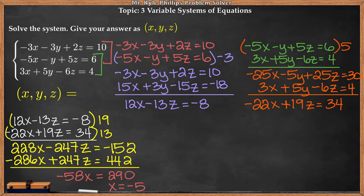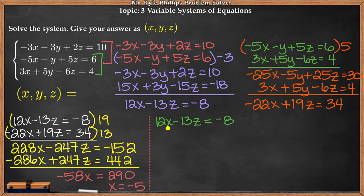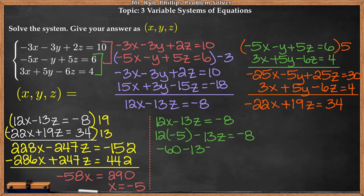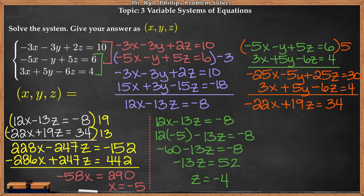Now that I know the value of x, I can substitute it into one of these equations to find the value of z. I'll substitute x into this top equation: 12x minus 13z equals negative 8. Taking negative 5 and substituting in for x: 12 times negative 5 minus 13z equals negative 8. This gives me negative 60 minus 13z equals negative 8. Adding 60 to both sides: negative 8 plus 60 is 52. And 52 divided by 13 is 4, so z is negative 4.